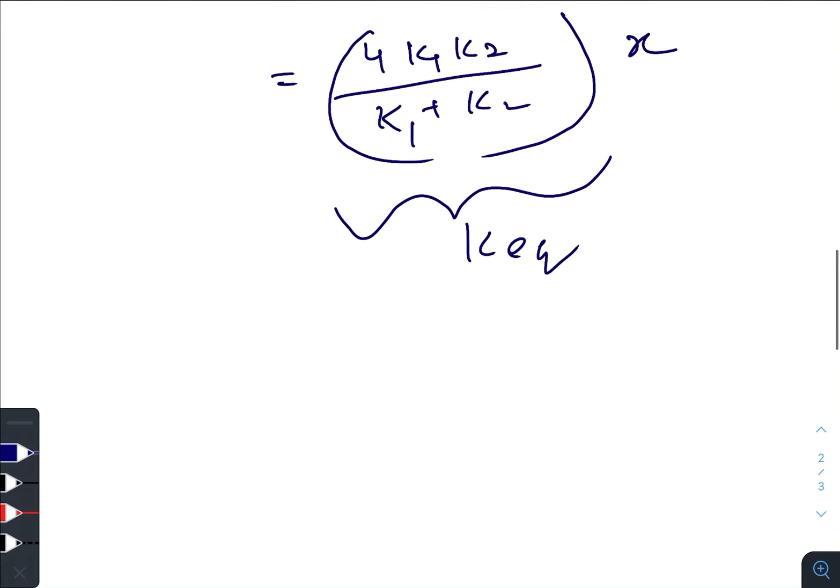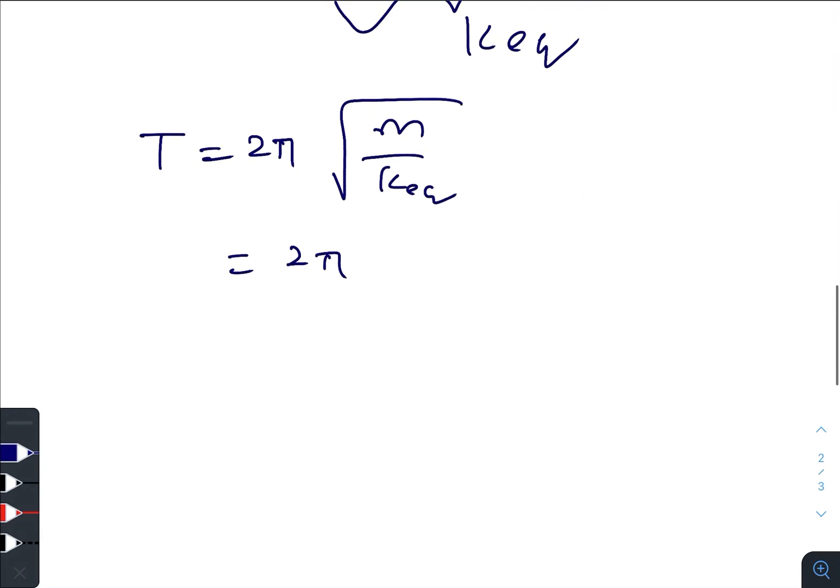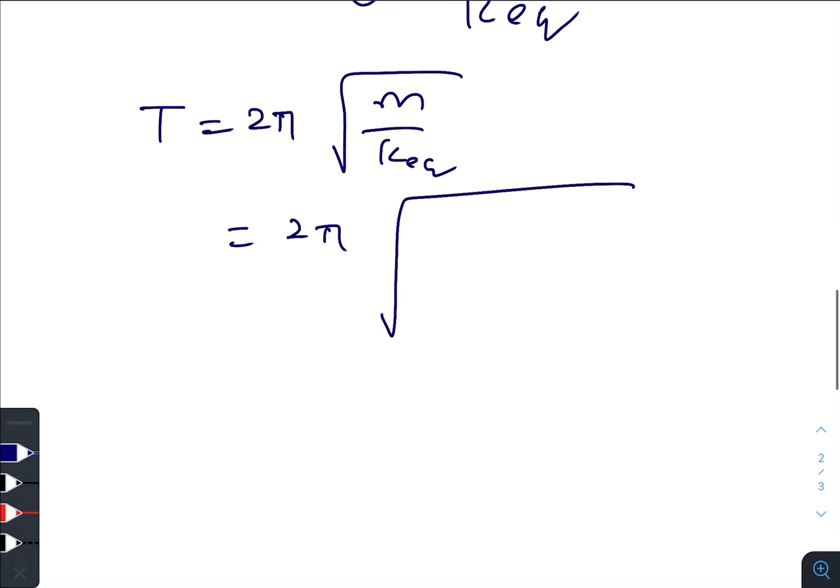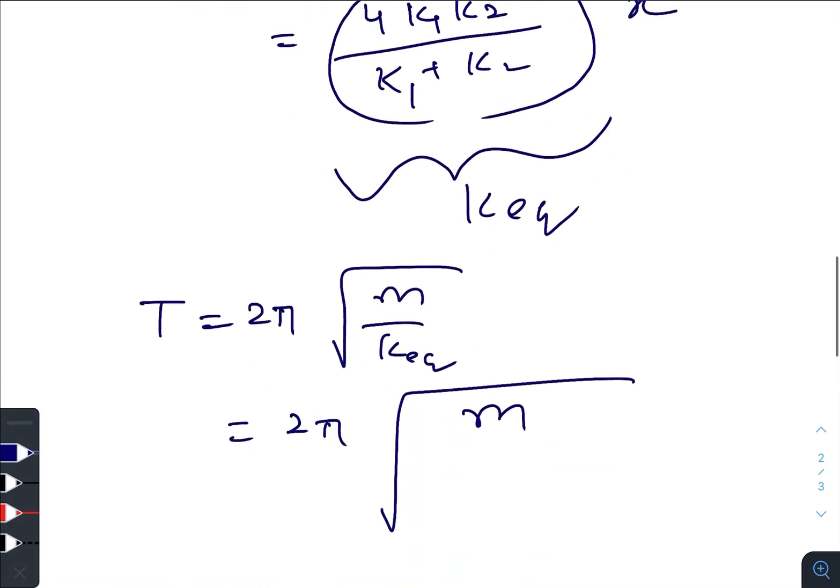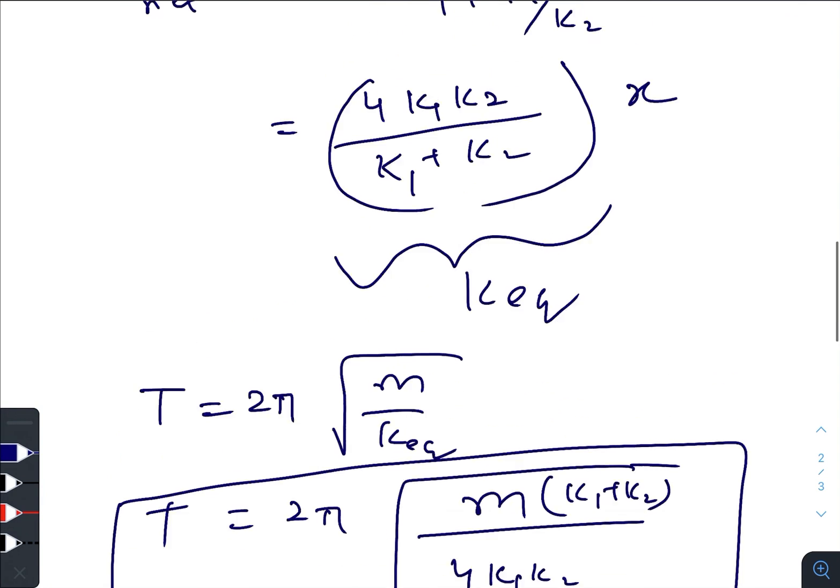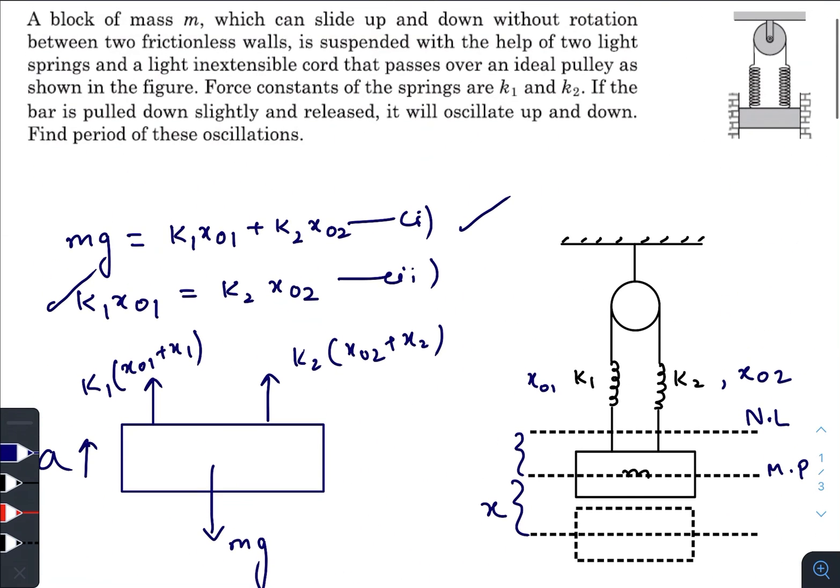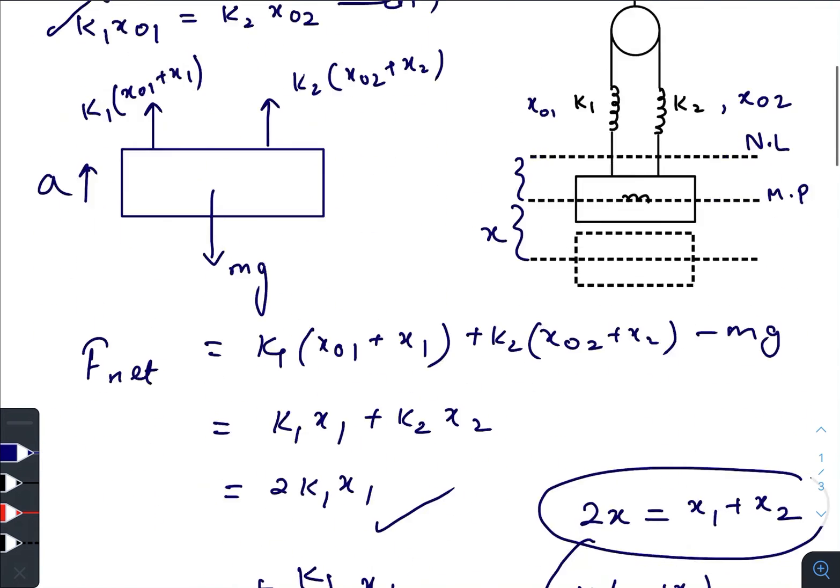We can use this for the expression of time period, that is 2π times the square root of m divided by k_equivalent, which is m divided by (4k₁k₂)/(k₁ + k₂). So this is our final expression for the time period. They have asked for the period of oscillations, so this is our final answer.